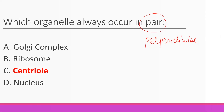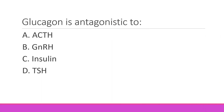Glucagon is antagonistic to — the given option is C — insulin.